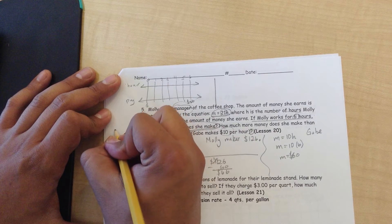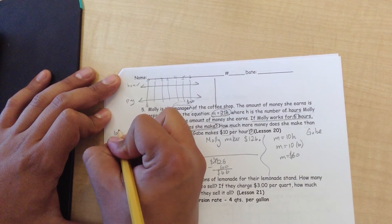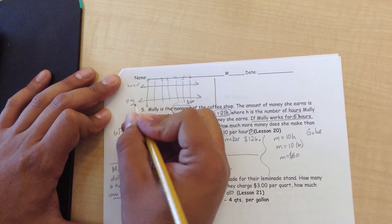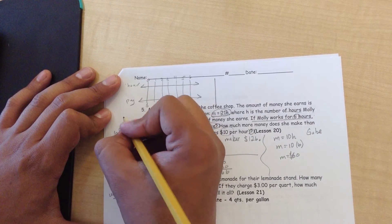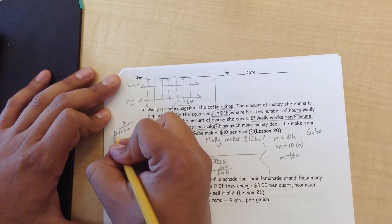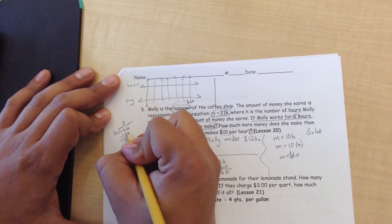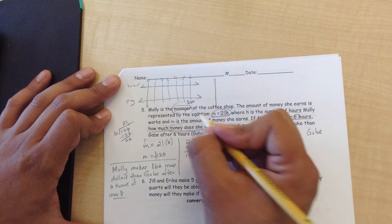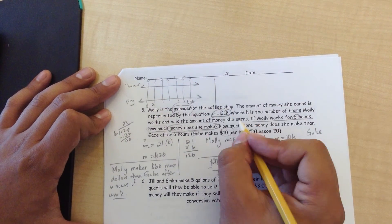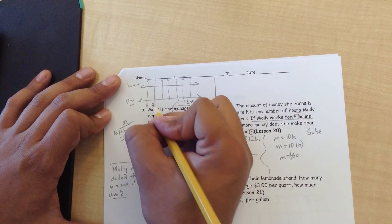So, in order to figure that out, we need to divide 6 hours into the 126. 6 divided by 1, you can't do that. 6 divided by 12 equals 2 times. 6 times 2 is 12. Bring the 6 down. 6 times this goes into 6 one time. So, she makes $21 an hour. That confirms this, doesn't it?